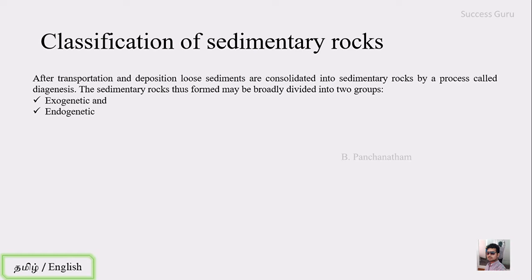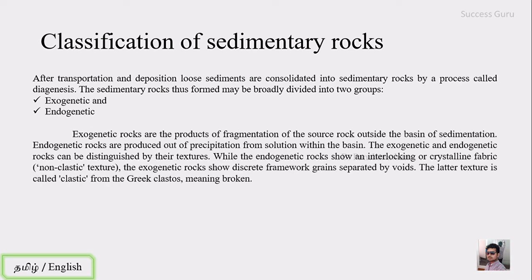The sedimentary rocks thus formed may be broadly divided into two groups: exogenetic and endogenetic. Exogenetic rocks are the product of fragments of the source rock that are formed outside the basin of sedimentation, whereas endogenetic rocks are produced out of precipitation from the solution within the basin. In general, exogenetic rocks originate outside the basin and are transported to it, whereas endogenetic rocks are precipitated within the basin itself.